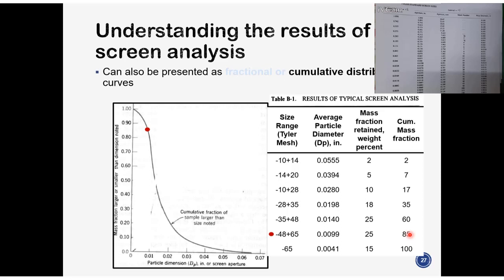We can get 17% of my sample is higher than 0.028, 35% is higher than 0.0198 and so on. And finally, my lowest, remember the lowest? This is minus 65 and pan. This one, the average particle diameter is 0.0041. And here we are saying that 100% of my particle is larger than this lowest diameter that I have, 0.0041.